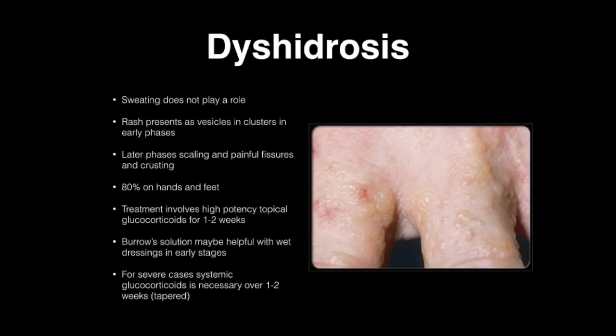The next disorder we need to talk about is dyshidrosis. You tend to see this in the web spaces of patients' fingers and toes, although it can be anywhere — essentially where there are folds. Sweating does not play a role in this; this used to be a myth. The rash presents as vesicles in clusters in early phases. Later, they present as scaling and painful fissures with crusting. It can vary very similarly to atopic dermatitis. About 80% of conditions are on the hands and feet.